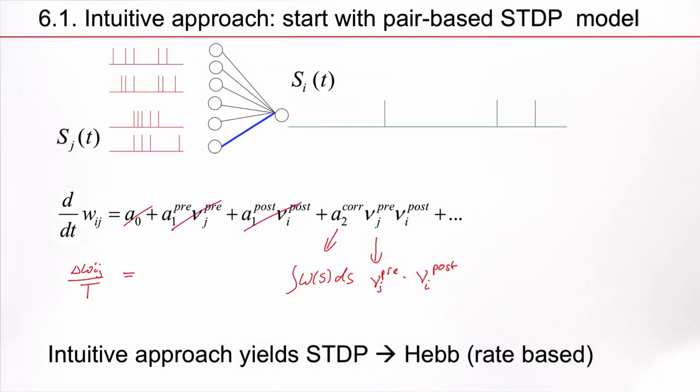The other terms don't play a role at this stage of the argument. So, our intuitive approach yields a relation from STDP to rate-based models, and you see immediately that this is a standard Hebbian learning model.